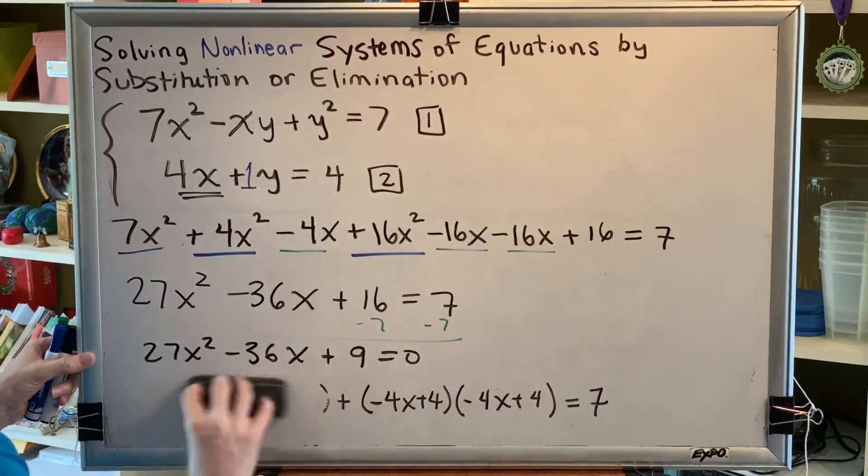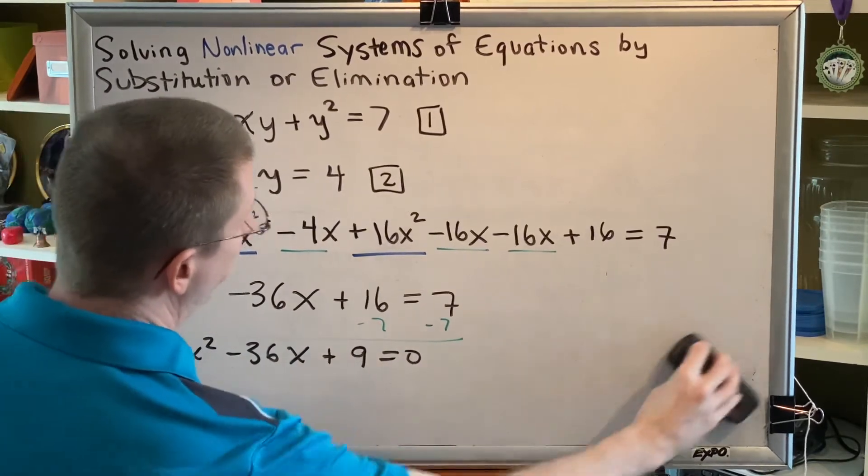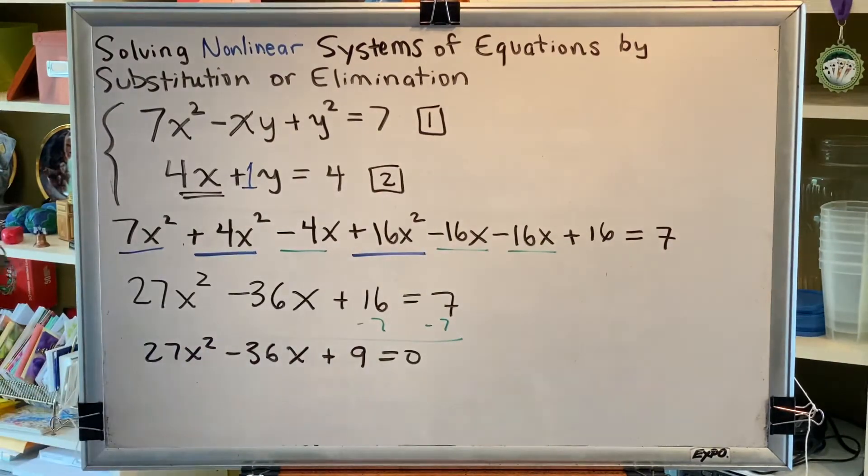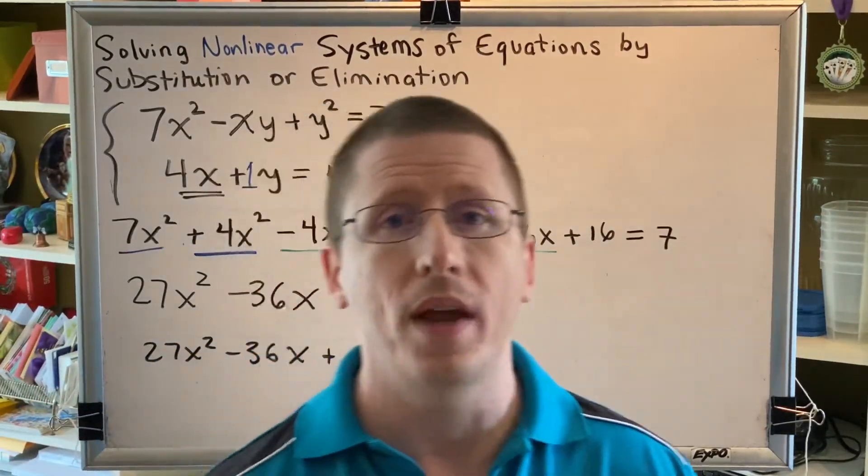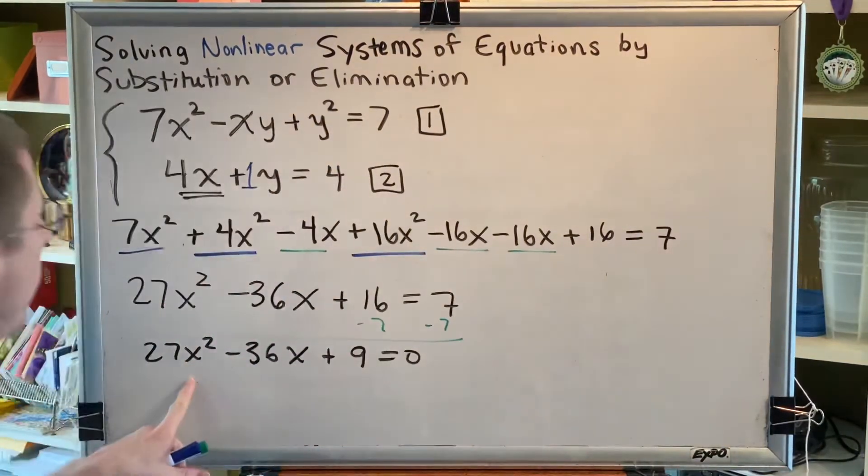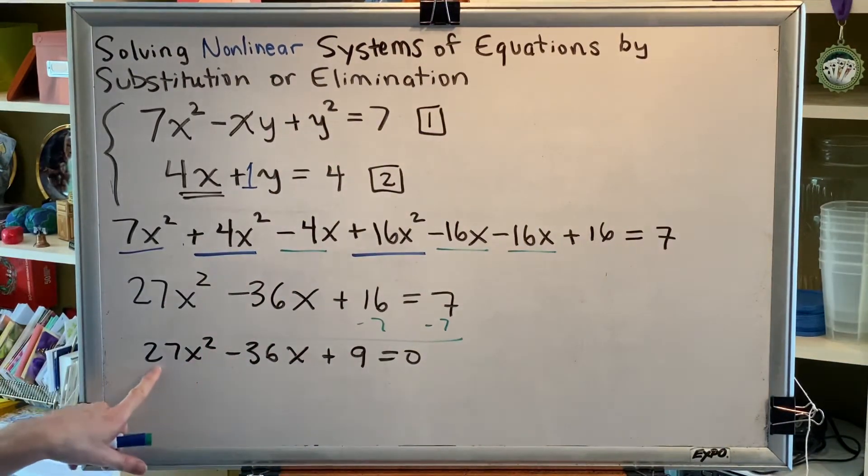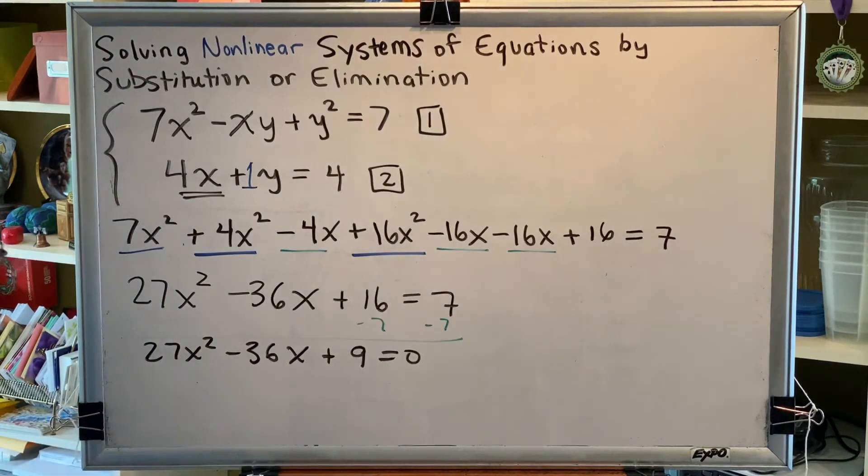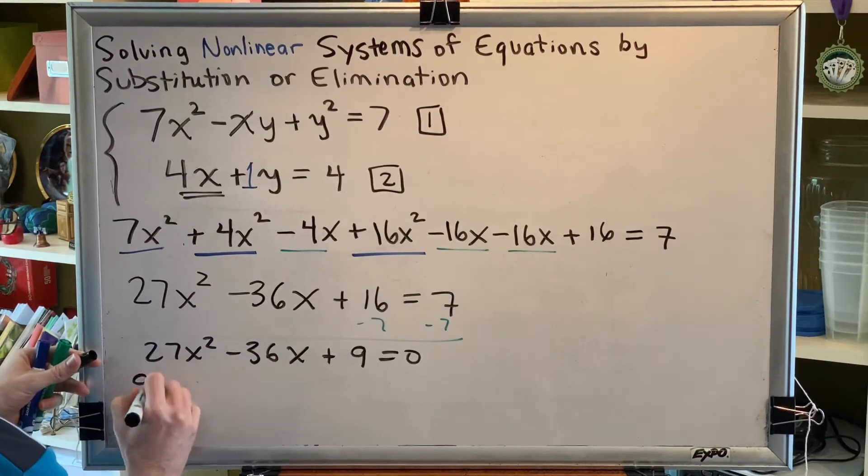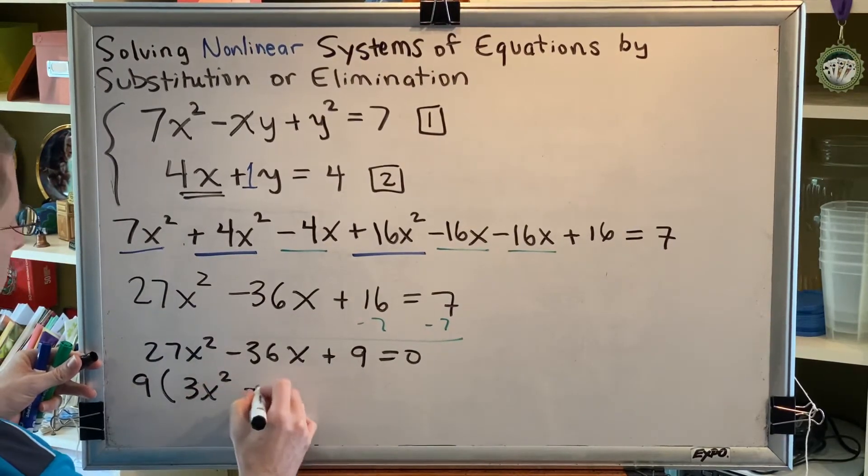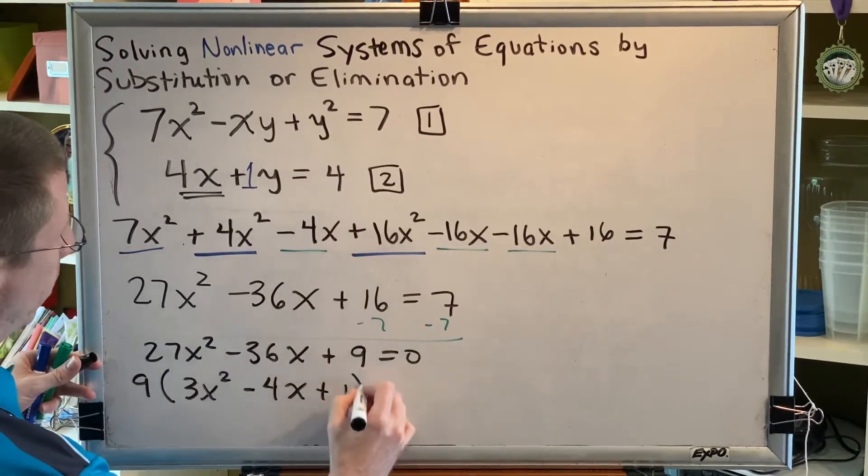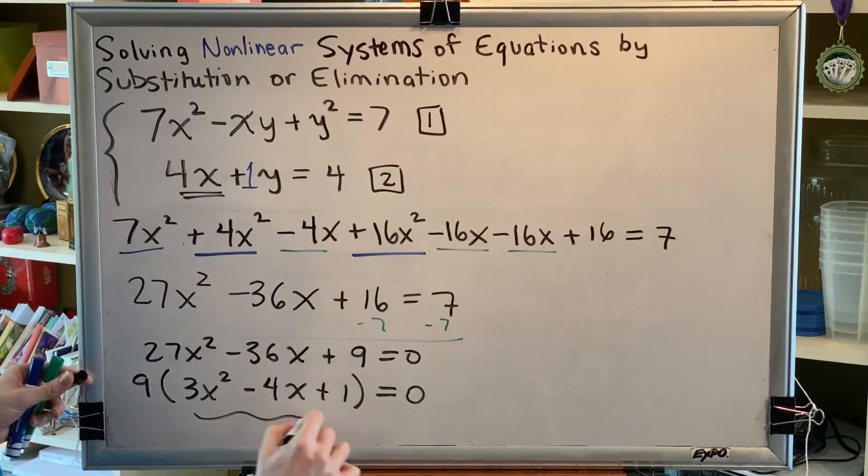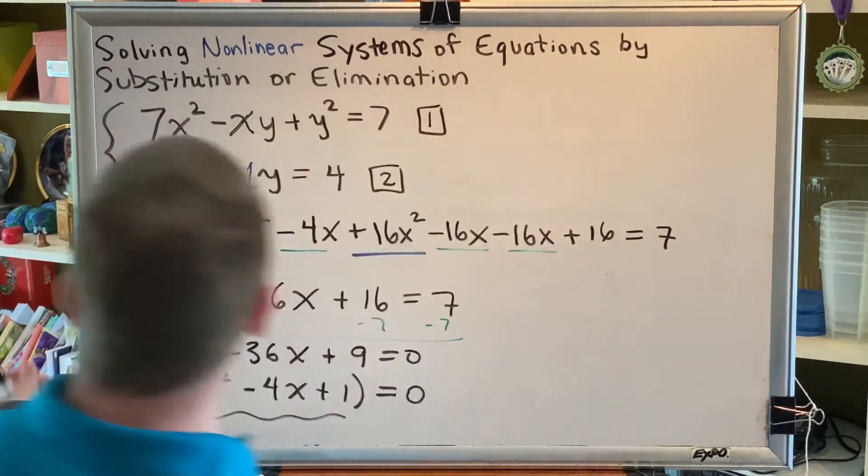Now if we're going to try and solve this by factoring, we have to know our factoring steps. The very first step of factoring is to put all of your terms in descending order, which this is already in. The second step of factoring is to identify and factor out your greatest common factor, your GCF, which for this equation happens to be 9. 9 goes into 27 three times. 9 goes into 36 four times. And of course, 9 goes into itself just once. So if we factor out the 9 here, we're going to have 3x squared, minus 4x, plus 1, equals 0. Now we just have to see if we can factor this trinomial.